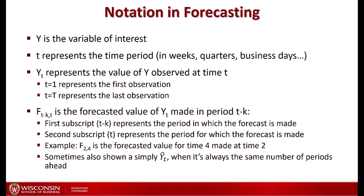Most of the time we predict the same number of periods ahead, so we may not indicate t-k explicitly. In that case we simply denote it Y-hat with a single index T, where the hat indicates it's a prediction and T indicates which period the forecasted value is for.